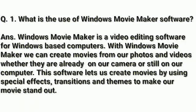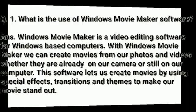The first question is: what is the use of Windows Movie Maker software? Answer is: Windows Movie Maker is a video editing software for Windows based computers. With Windows Movie Maker, we can create movies from our photos and videos, whether they are already on our camera or still on our computer. This software lets us create movies by using special effects, transitions and themes to make our movies stand out, and apply transitions and special effects to make the movie very effective and impressive for the audience.